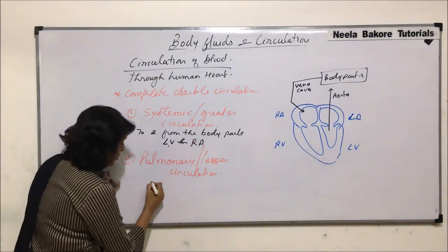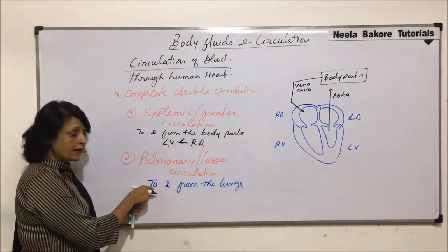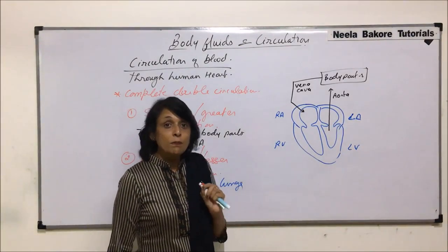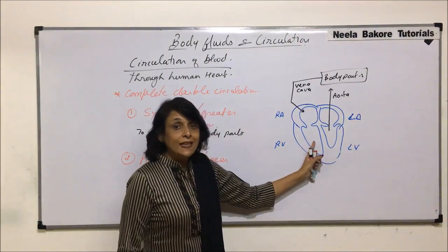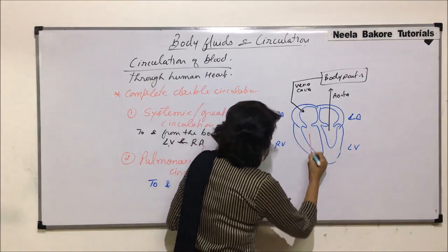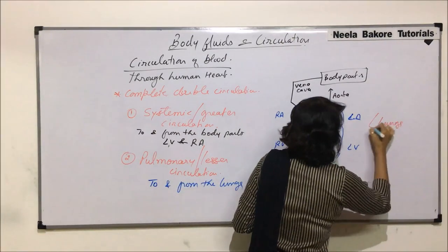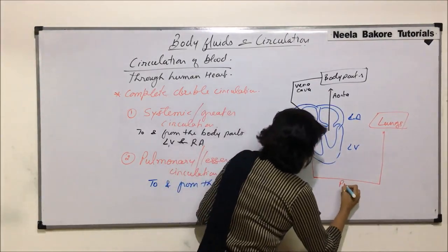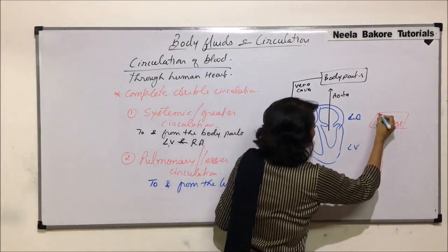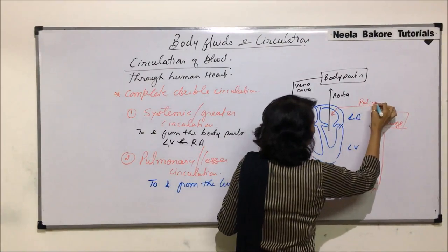Pulmonary circulation means the flow of blood to and from the lungs. The deoxygenated blood from the right ventricle goes to the lungs through the pulmonary artery. From the lungs, after oxygenation, the blood comes into the left auricle through the pulmonary veins.